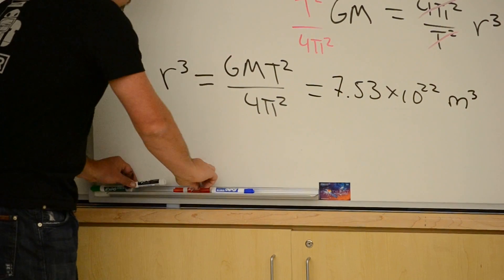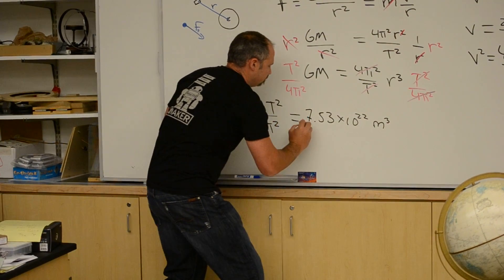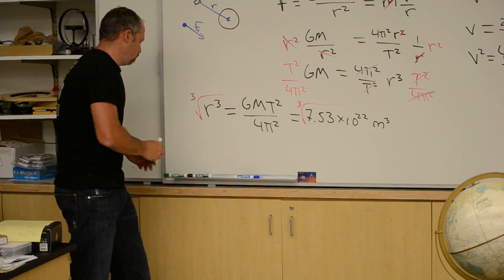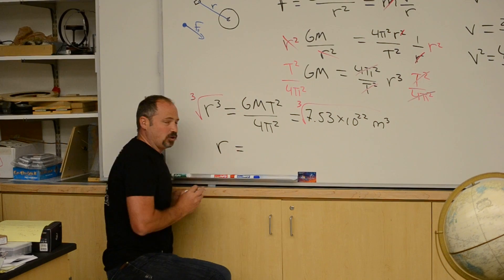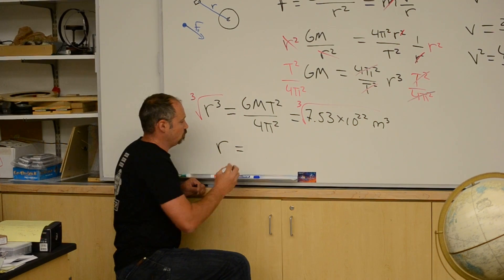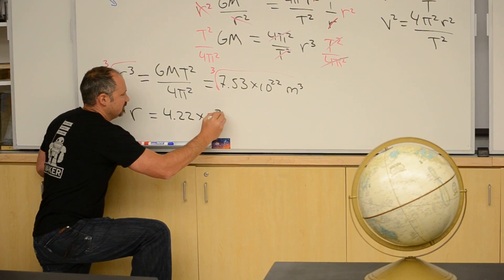Great. Only thing left to do is take the cube root of both sides. And if you do that, you get that the distance between the center of Earth and Bender for geosynchronous orbit is 4.22 times 10 to the seventh meters.